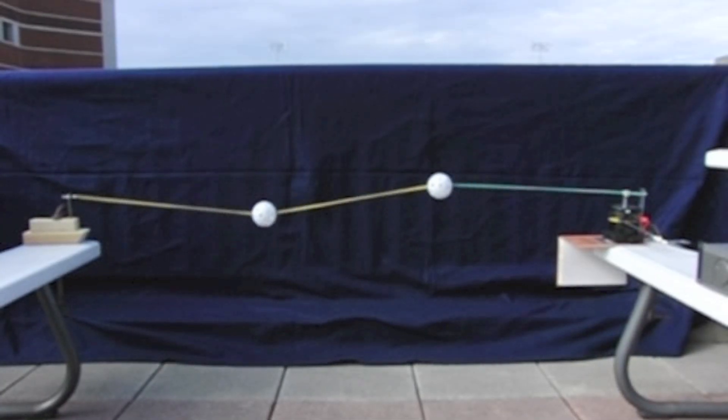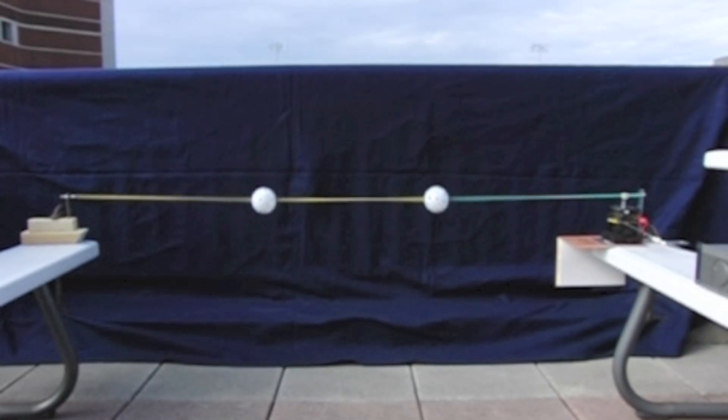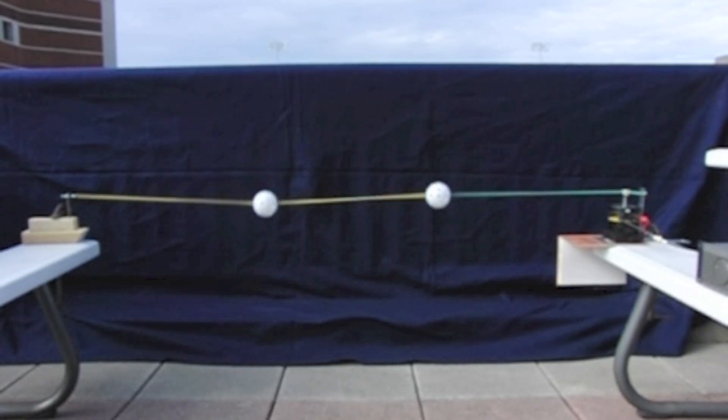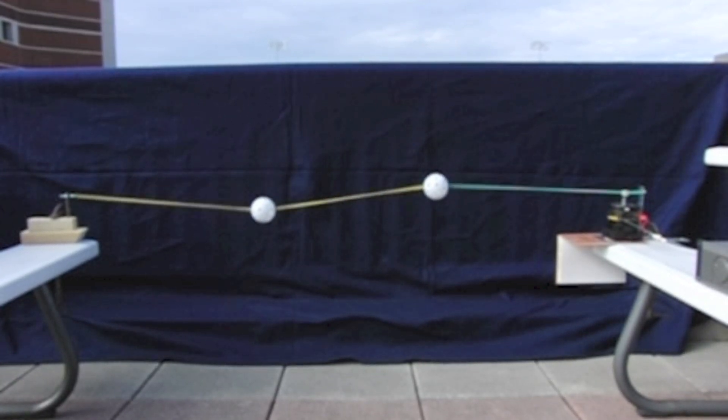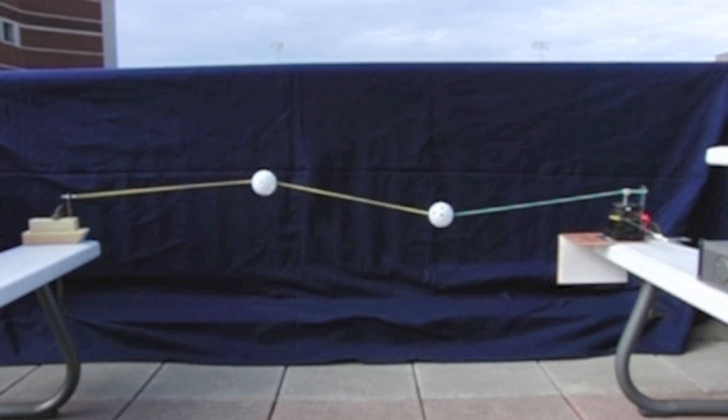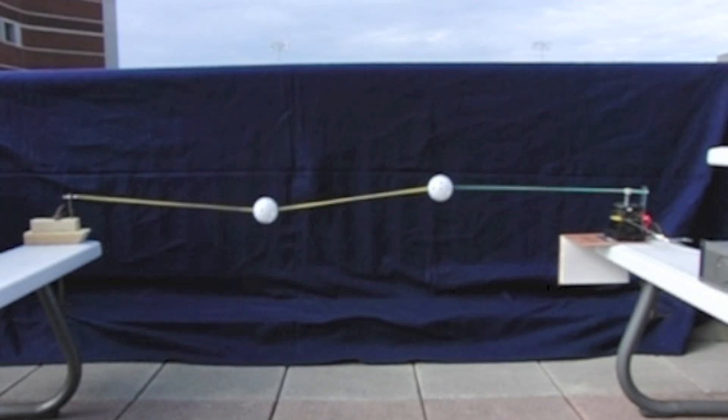In the second mode of vibration, the two masses oscillate in opposite directions, one going up while the other one is going down. At the very center in between the two masses is a node, a point that doesn't move at all.